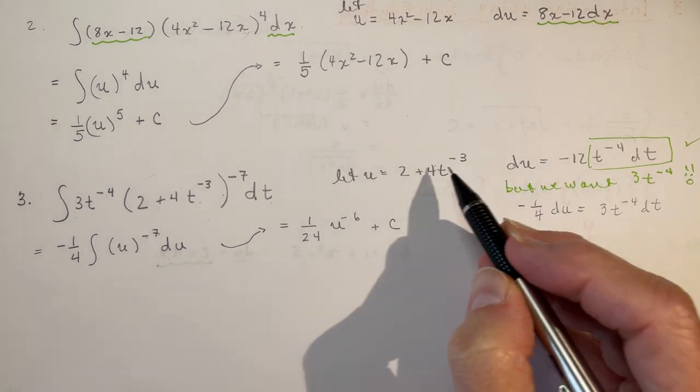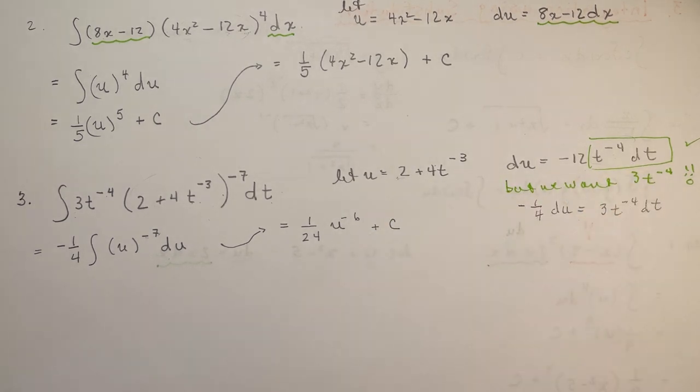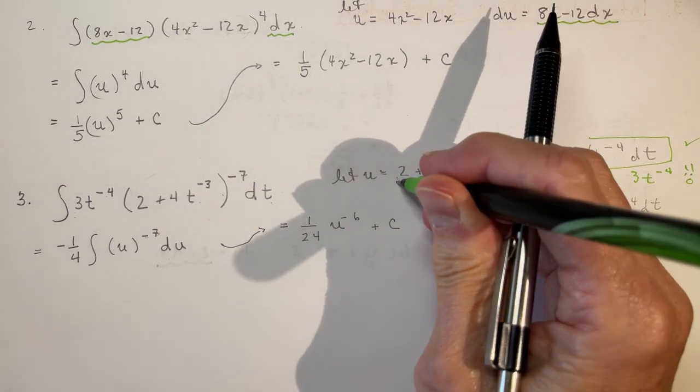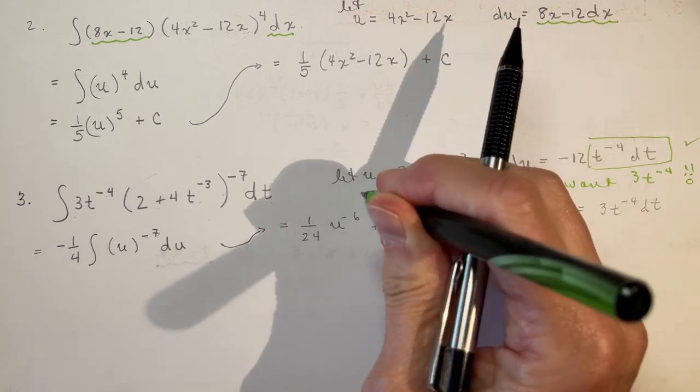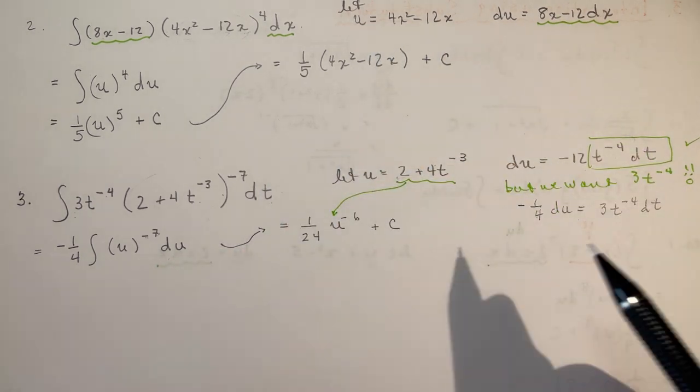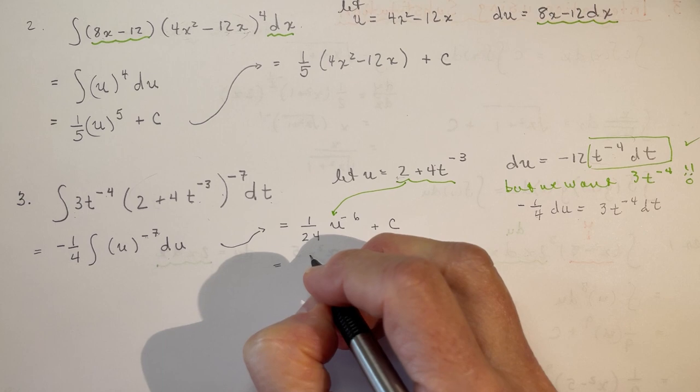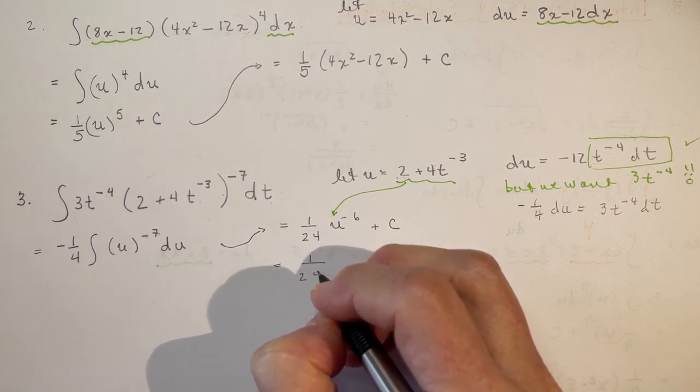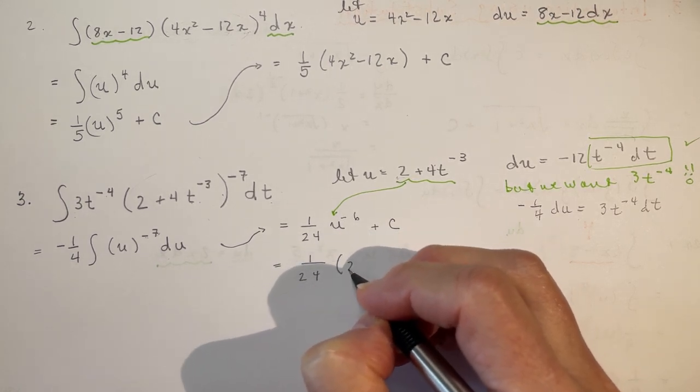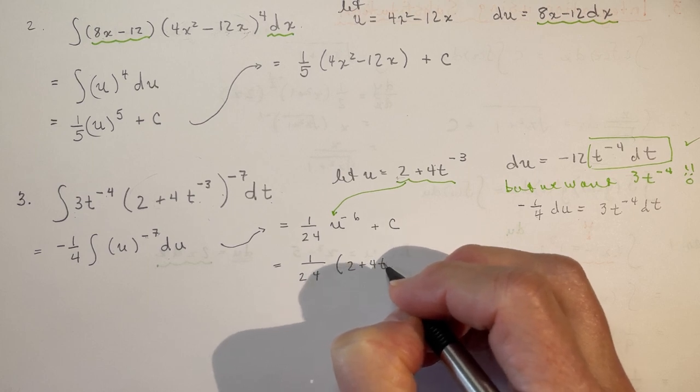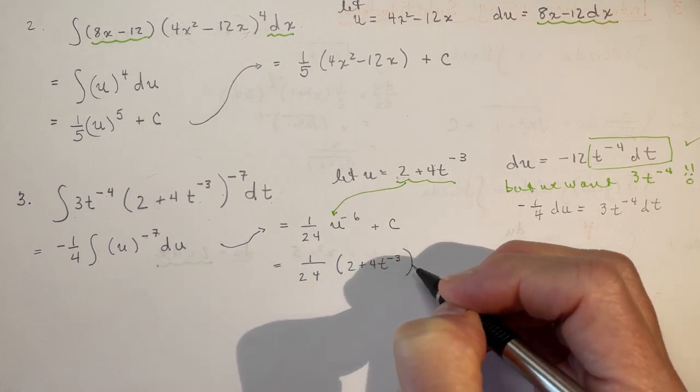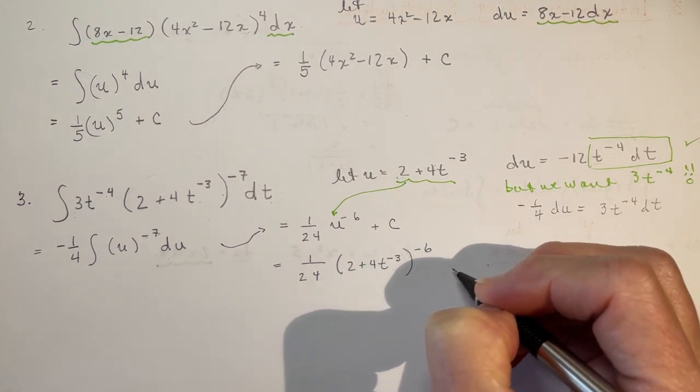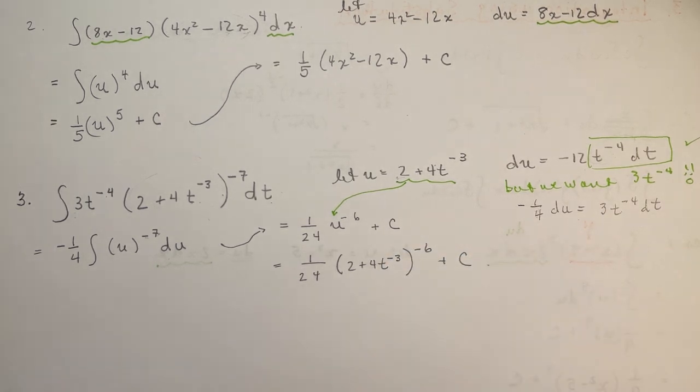And finally, all I have to do is substitute back in this u right here. I'm going to plug that back in right there. So in the end, I'm going to have 1 over 24. My u is 2 plus 4t to the minus 3 raised to the minus 6 plus c. And there you go. Wasn't that easy? Yes.